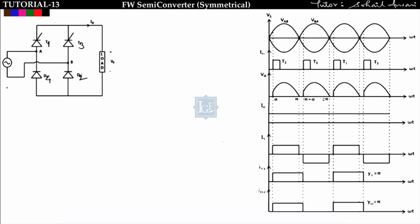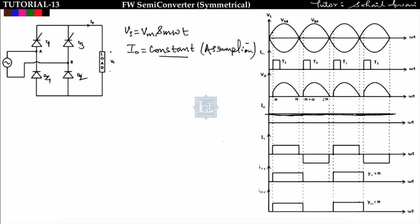The input voltage is vs = Vm sin(ωt), and we assume that the load current is constant at all times. The source voltage can also be written as vab, and vba = −Vm sin(ωt). This has been explained in the previous lecture.